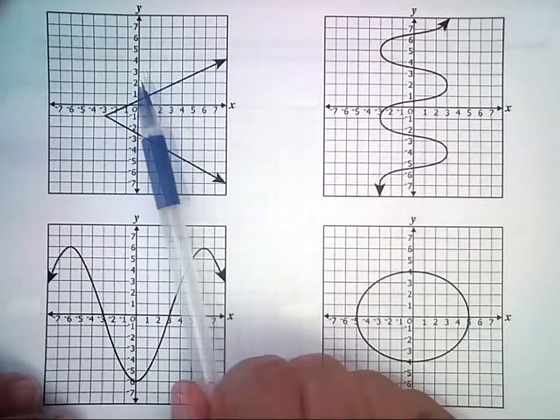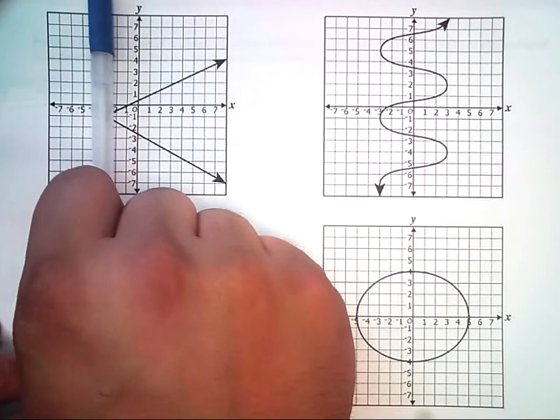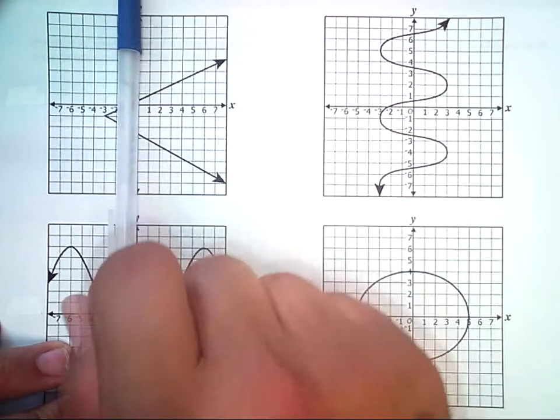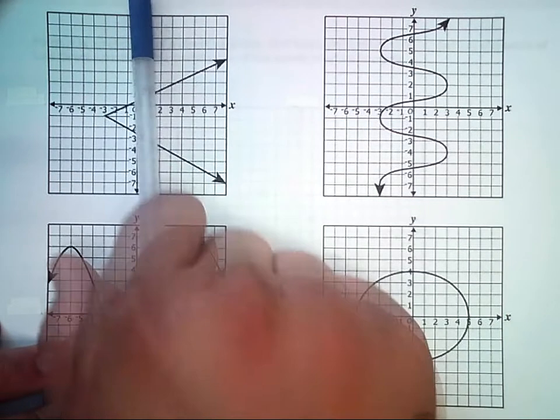So if I look here, if I just take my pencil and use it as a vertical line, you can actually see that the graph touches the pen here twice. That is not a function.